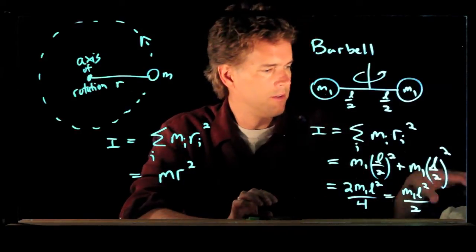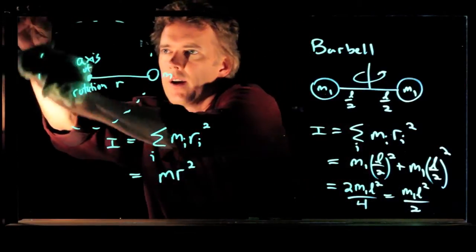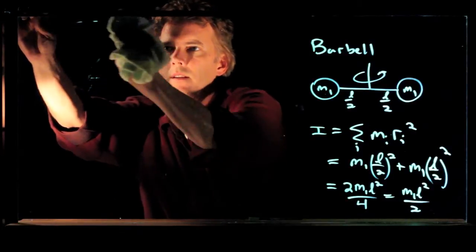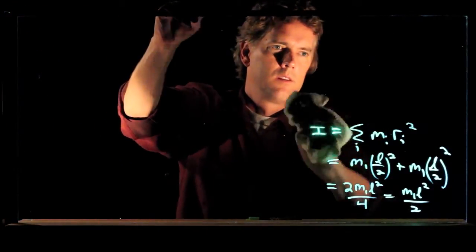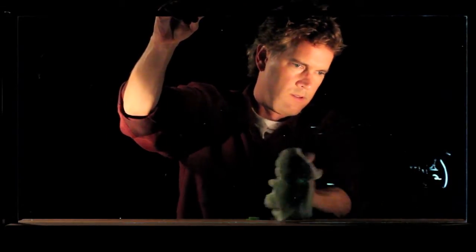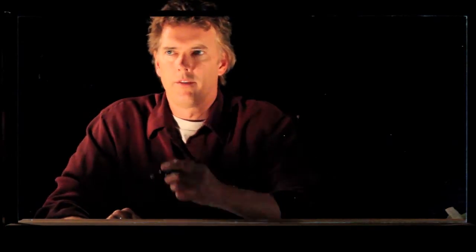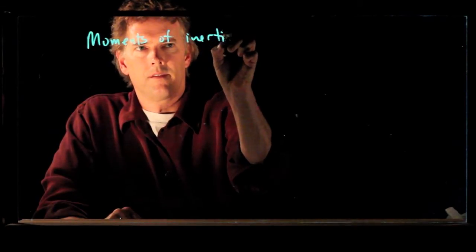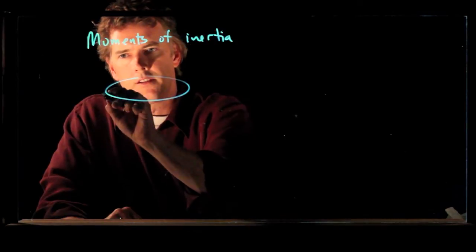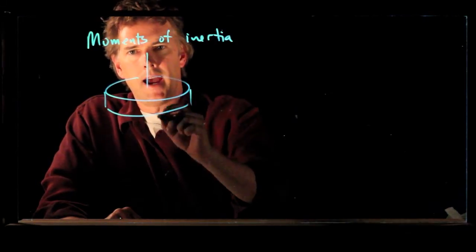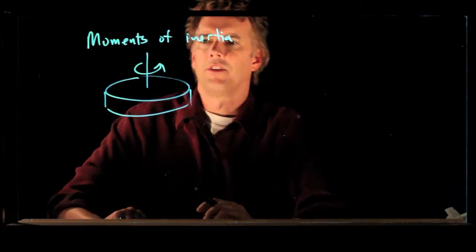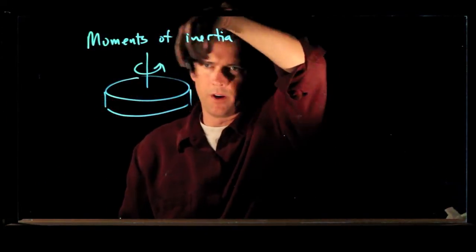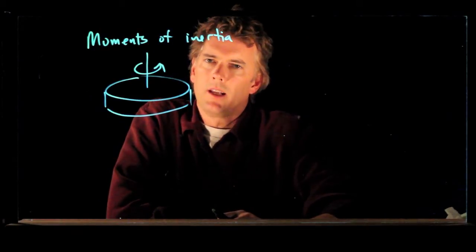Now, how does this relate to other objects? Let's say we want to calculate the moment of inertia of a disk. Okay, here's our solid disk. And now let's spin it about an axis right through the center. Okay, so we put a string on this disk and we're going to spin it around like that. How do you calculate that moment of inertia?